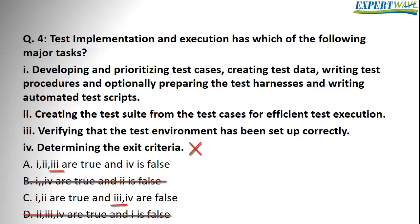Now looking at answers A and C, we can see that option three is the only option that will help us pick either A or C, since options one and two are true in both answers A and C. So we're going to read option three: 'Verifying that the test environment has been set up correctly.' This is actually part of the implementation and execution testing activity, so option three is true. The answer that has option three as true is answer A — so the correct answer is A.